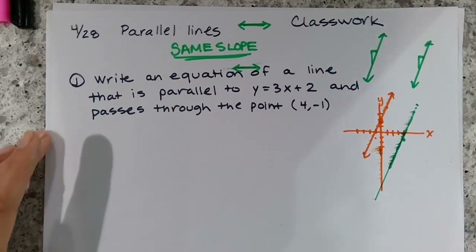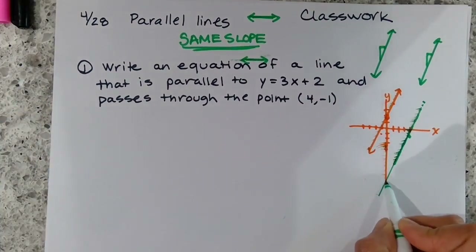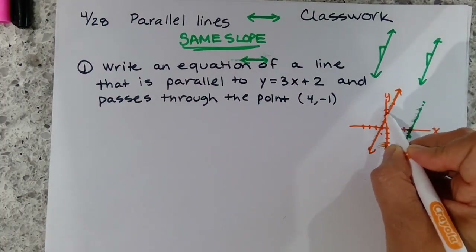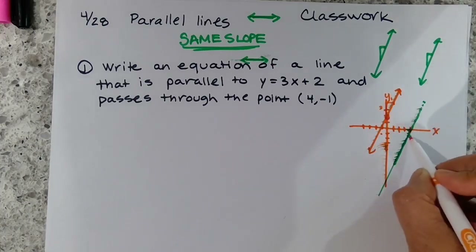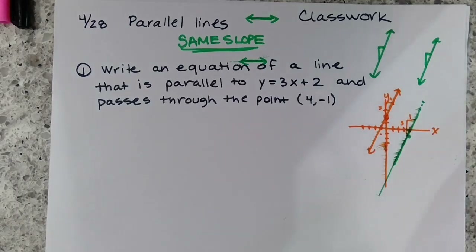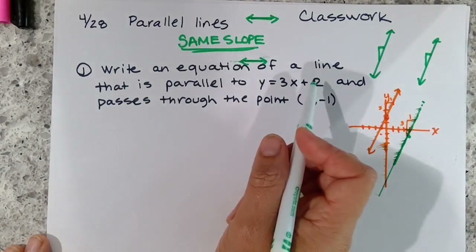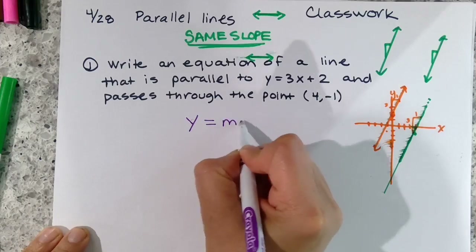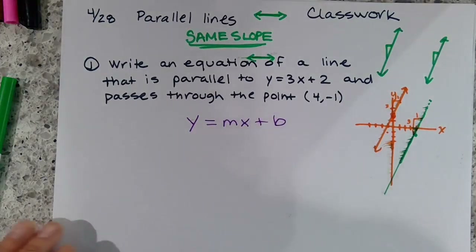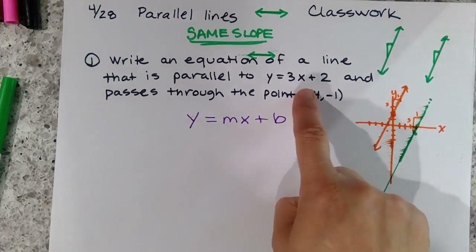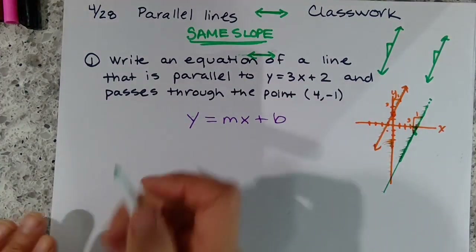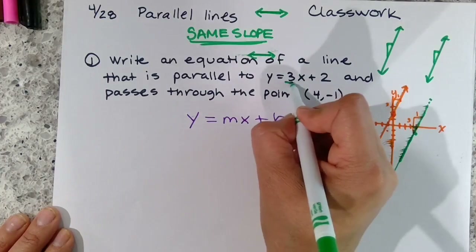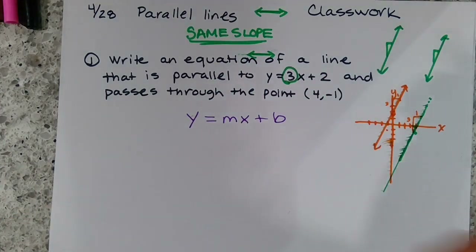Since I don't have graph paper, we're going to solve it algebraically to find that y-intercept value. If this line has a slope of 3 over 1, the parallel line also has a slope of 3 over 1. The equation of a line is y equals mx plus b. If it's parallel, the slope must equal 3 — that's the only information we take from the given equation.